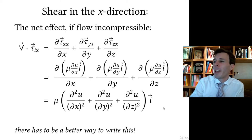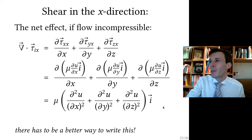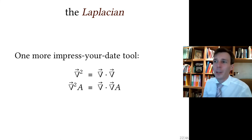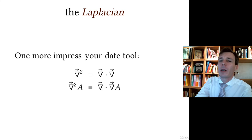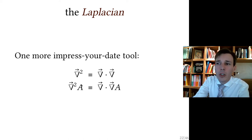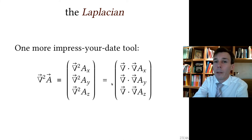This is tedious to write down, so we introduce a new tool: the Laplacian operator. The Laplacian is the dot product of two operators — divergence and gradient. Applied to a scalar field, it gives the divergence of the gradient of that field — the second change in space. Applied to a vector field, it produces a vector field made up of the Laplacian of each component.